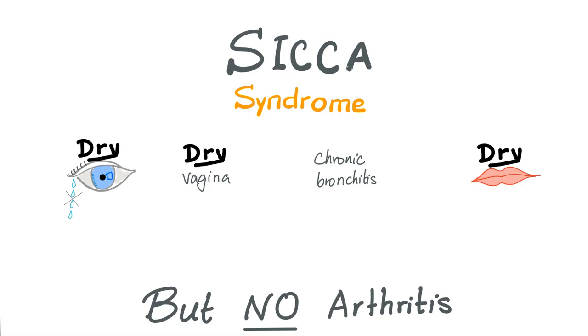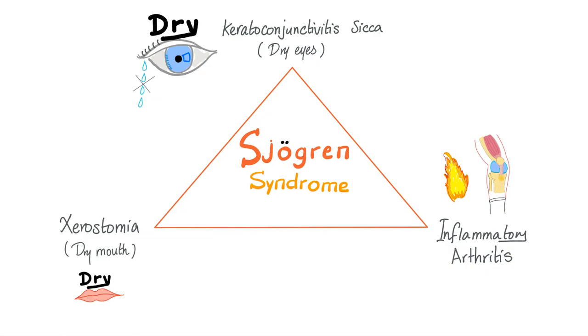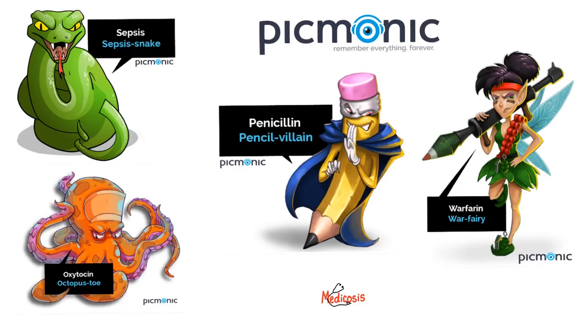So here is Sjögren syndrome one more time: keratoconjunctivitis sicca, xerostomia, and inflammatory arthritis — dry eyes, dry mouth, arthritis. And now let me show you a Picmonic about Sjögren's. We did the same thing with gout in the previous video.